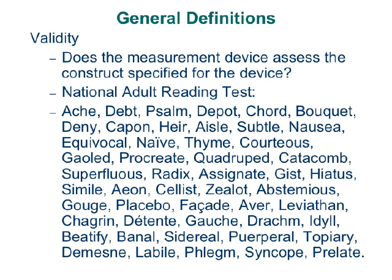If I have a construct like IQ, I have to define it and then specify what kind of test or device is used to assess IQ. You can have very consistent and reliable, yet invalid, instrumentation. For example, if I design an arithmetic test containing 10 items that contain words you spell, any reasonable person will notice that what I'm calling an arithmetic test is not arithmetic at all — it's spelling, a different construct.